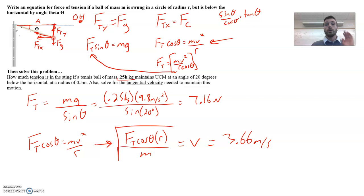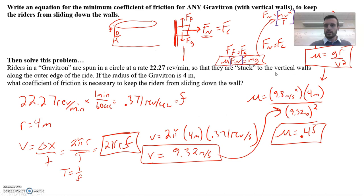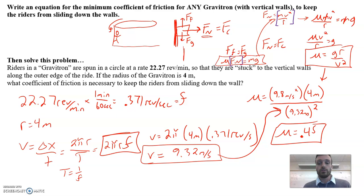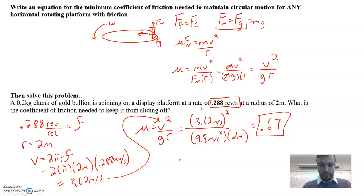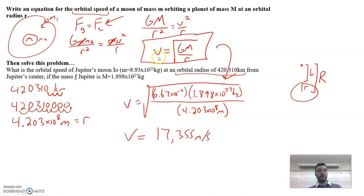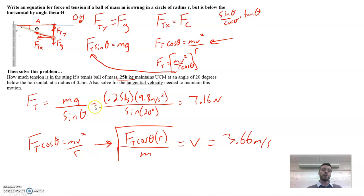To recap: we showed four examples of what can act as the centripetal force. The normal force acts as centripetal in the gravitron. Friction acts as centripetal for a rotating platform or car turning. Gravity acts as centripetal for circular orbital motion. And tension acts as centripetal for a ball on a string — reminding us not to forget vector components. This has been a recap of circular motion problem solving. Until next time, this is Mr. Simpkins in the Simpkins Physics Corner.